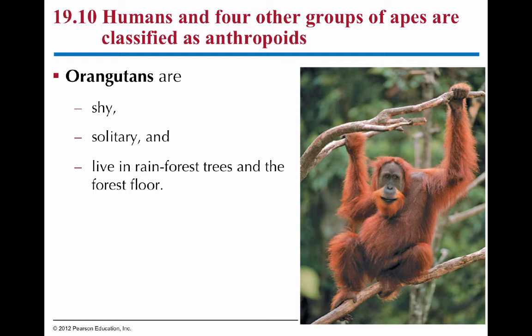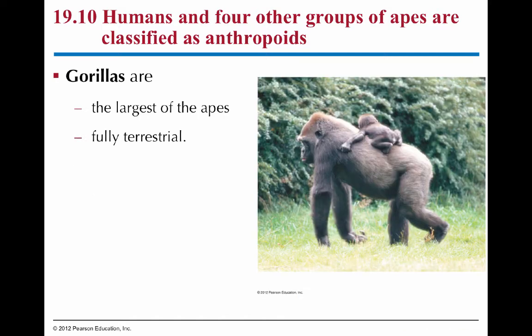Orangutans are solitary; they don't have strong, complex social structures. They live both in the trees and on the forest floor and are pretty reserved as far as apes go. Then we have gorillas — they're very large, live completely on the ground, build nests on the ground, take care of their young, and have strong social structure. Many are actually endangered because of poaching as well as encroachment on their land.